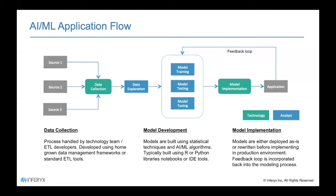Once the model is implemented, outcomes flow into an application exposed to business users. They evaluate whether predictions are correct, inaccurate, or partially correct. This feedback is fed back into the model training process — the feedback loop — enabling fine-tuning. Point-in-time tuning uses quick parameter changes and hyper-tuning, while long-run periodic tuning relies on fresh incoming data and the feedback loop to improve the model further.